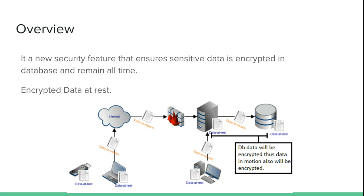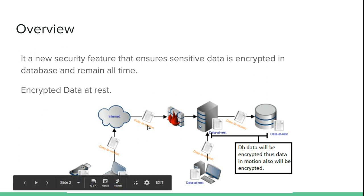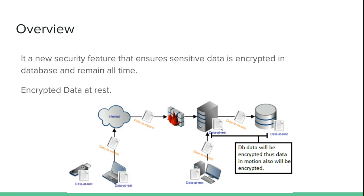There are two states of data: data in motion and data at rest. Data in motion is when we are traversing data from one location to another. Here you can see the database keeps data in a rest state, and whenever any application tries to access this data, it becomes data in motion. Using these techniques ensures that data at rest is always encrypted.